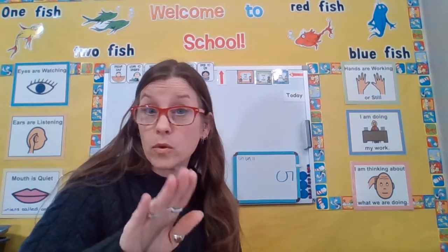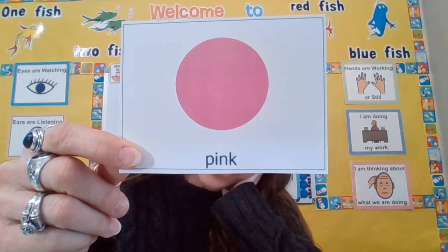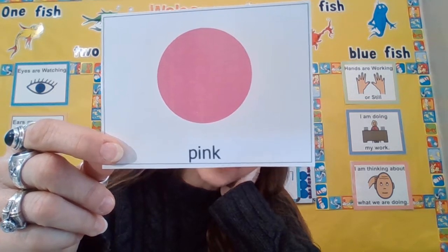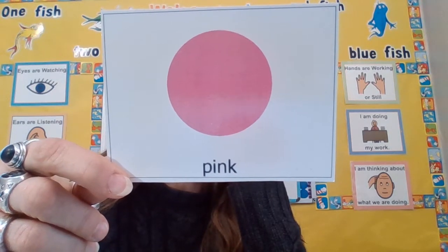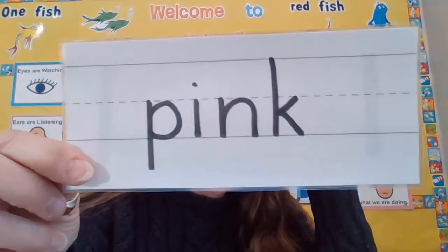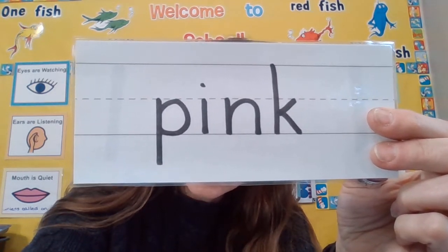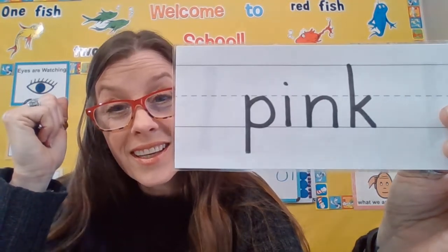Before we get started, I want to show you two things. One of the things I'm going to show you is the picture for our vocabulary. That is the picture for our vocabulary. Do you know what color that is? Yes, that is the color pink. Touch pink. That was the picture for pink. Now I'm going to show you the word. This is the word pink. What word? Pink. All right, let's go ahead and open our book.